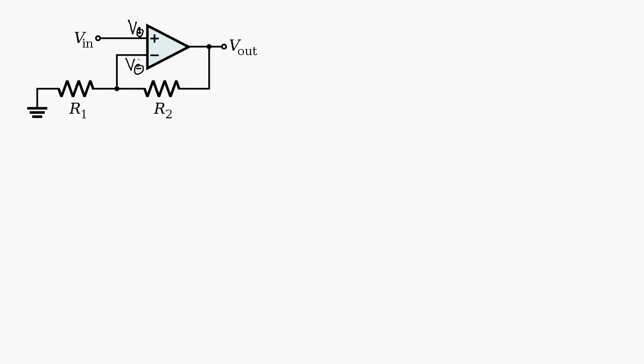Before we start this analysis we're going to go back to some of the assumptions that we make about these op-amps. One of those assumptions is that the amount of current that flows into the inverting terminal and into the non-inverting terminal is zero. The way we can look at that is that the input impedance to both of these terminals is infinite. So we want to figure out what is the actual relationship between the output voltage and the input voltage.